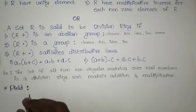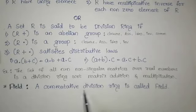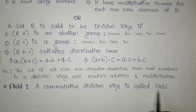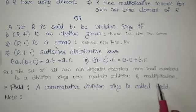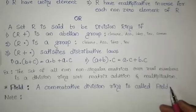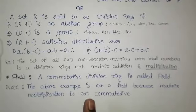Next I am discussing field. The field definition contains a commutative division ring — a commutative division ring is called a field. That means if commutative law holds good under multiplication, then it is known as a field. The above matrix example is not a field because matrix multiplication is not commutative.